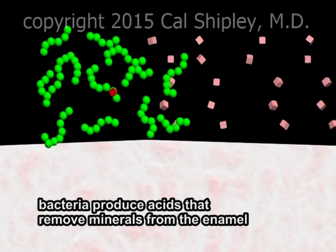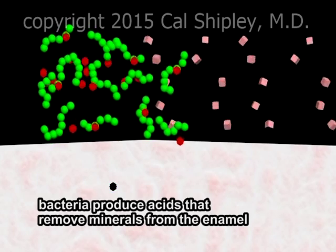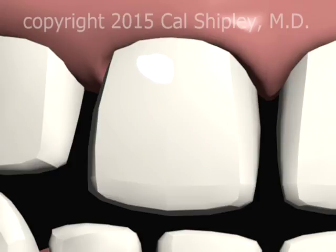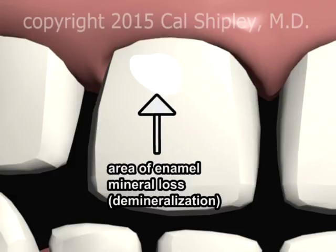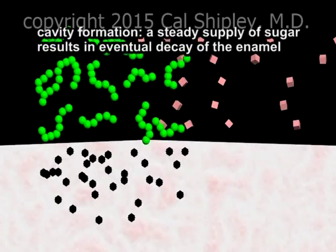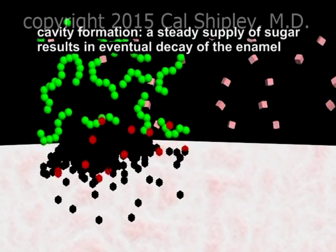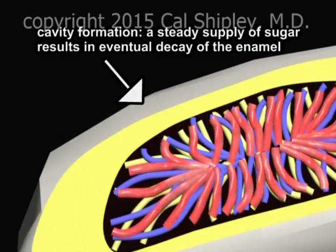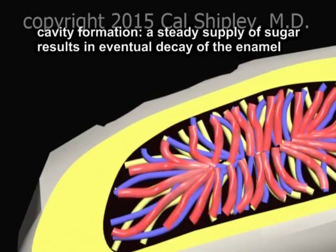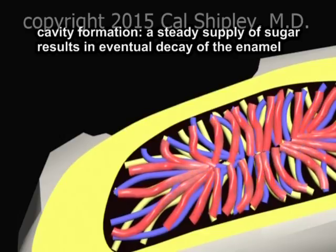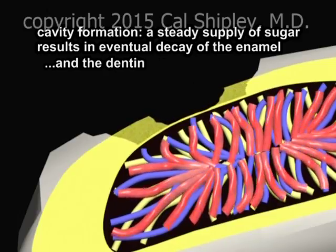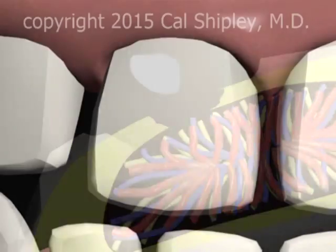The bacteria produce acids, which remove minerals from the enamel. The demineralization process initially causes depigmented areas to occur on the enamel's surface. A steady supply of sugars eventually results in decay of the enamel. From the incisal view in cross-section, we can observe the steady erosion of the enamel layer as the process of decay continues. Once the enamel layer has been completely destroyed, the acids produced by strep mutans begin to eat through the dentin. This entire process is known as cavity formation.